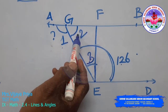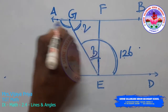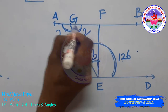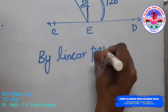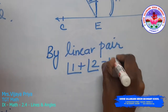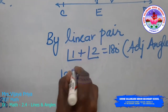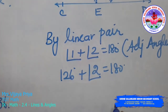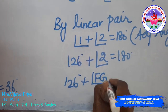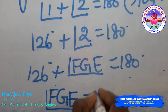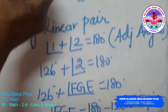Now finding angle 2 (FGE): angle 1 and angle 2 are two adjacent angles standing on a straight line, so by linear pair, angle 1 plus angle 2 equals 180 degrees. I have angle 1 as 126, so 126 plus angle FGE equals 180, giving angle FGE equals 180 minus 126 equals 54 degrees. So the values of angle 1, angle 2, and angle 3 have been found.